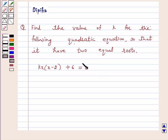Let's start the solution. Our given equation is kx into x minus 2 plus 6 is equal to 0. This implies kx square minus 2kx plus 6 is equal to 0.